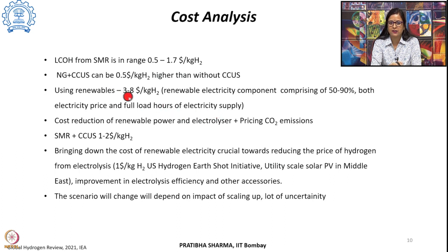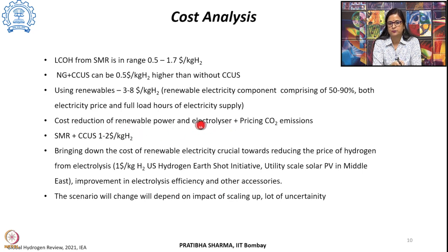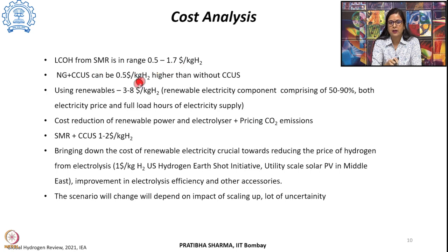Reducing the cost of renewable hydrogen from $3–$8 per kg to be comparable with fossil fuel-based production requires the price of renewable power or the cost of electrolyzers to come down. With economies of scale and more renewable deployment, renewable power costs will decrease. This will narrow the gap between reforming-based and renewable-based hydrogen costs, as will reductions in electrolyzer capex costs.